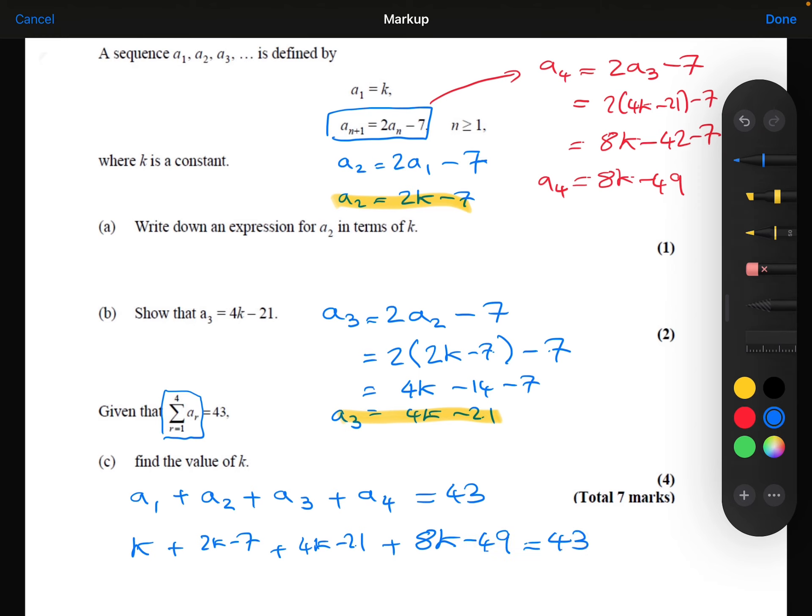All of that equals 43. So collecting up the k terms here, the k, 2k, 4k, 8k, that's going to give me 15k.